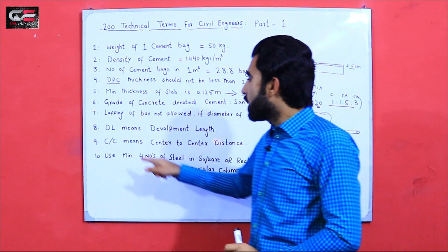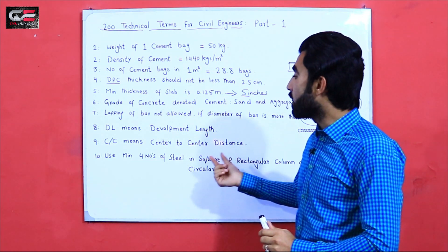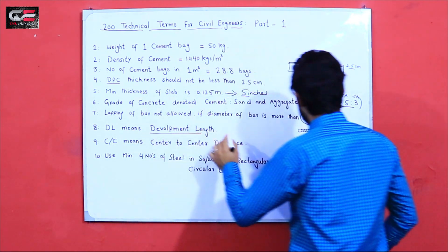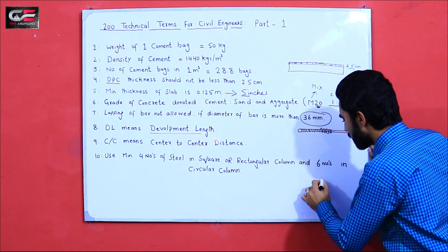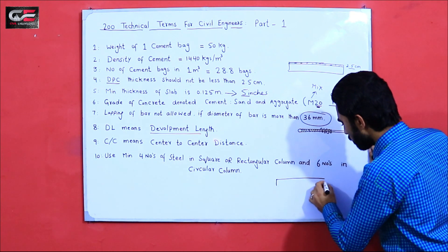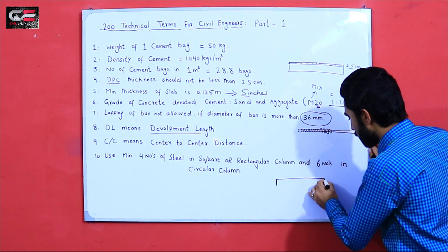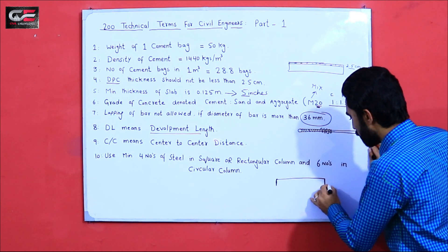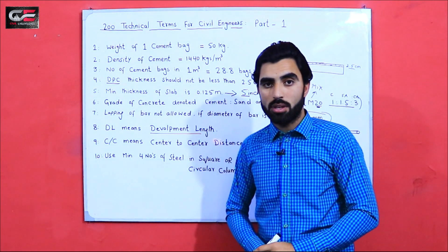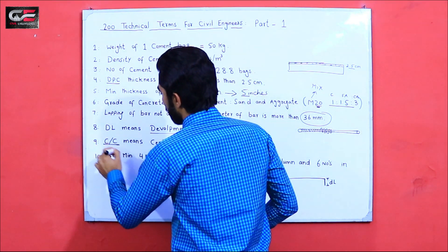The eighth term is DL — DL stands for Development Length, especially used in civil engineering drawings and steel structure drawings. As you can see here, this is an RCC beam. When the longitudinal bars at the end of the support extend beyond, that extension is called Development Length (DL).